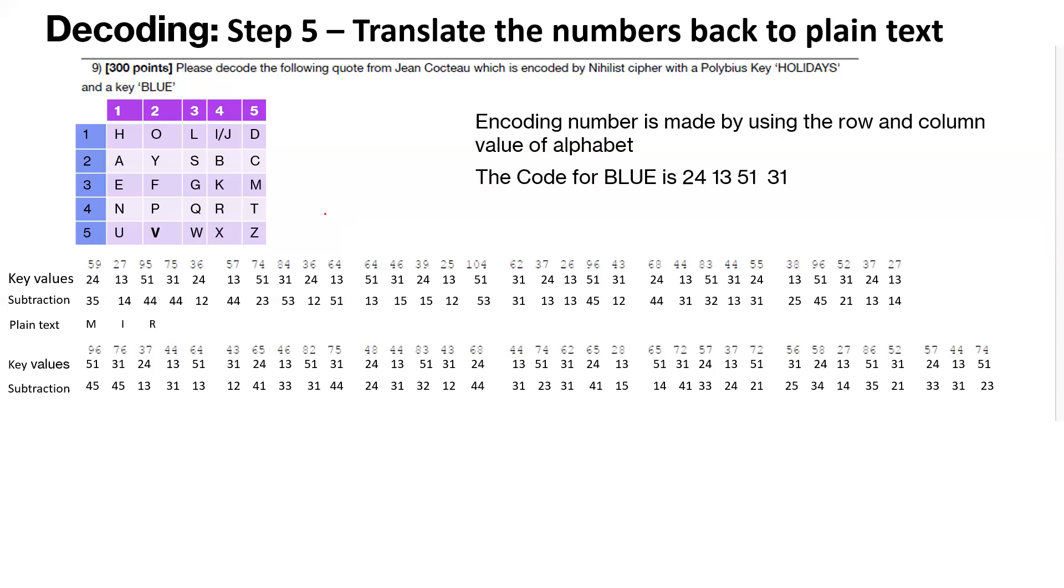So in this case, 44, R is 4 and 4, 44 out here. So we keep doing this for the entire row. So I have here filled in everything for the entire row.